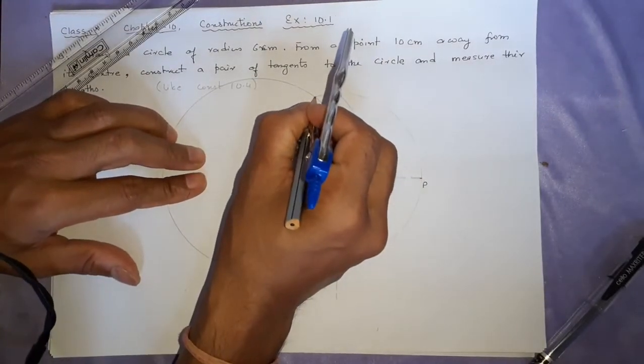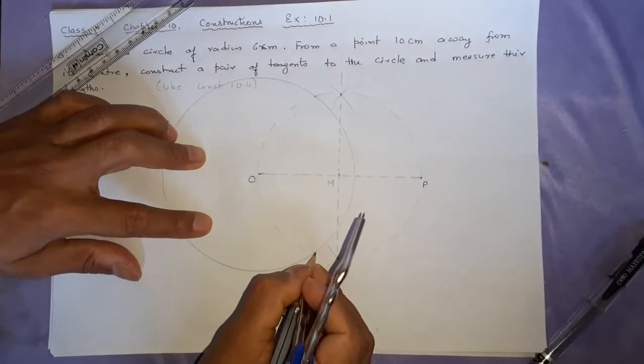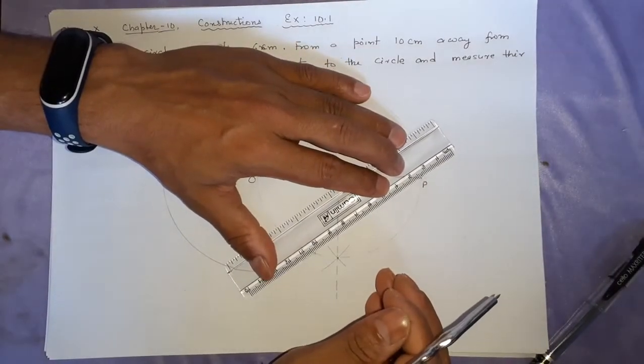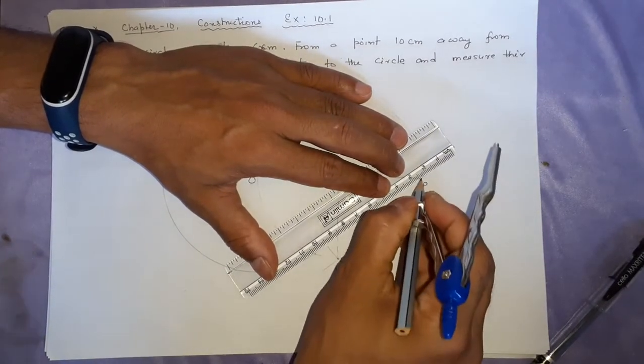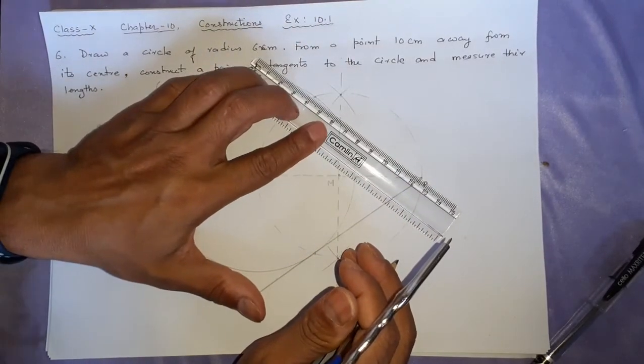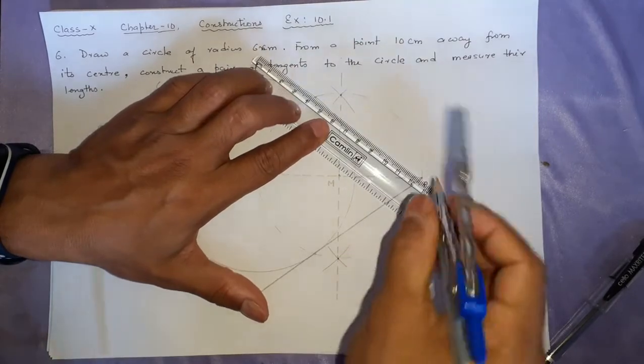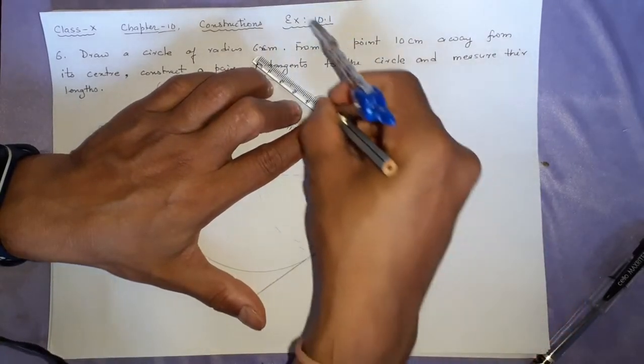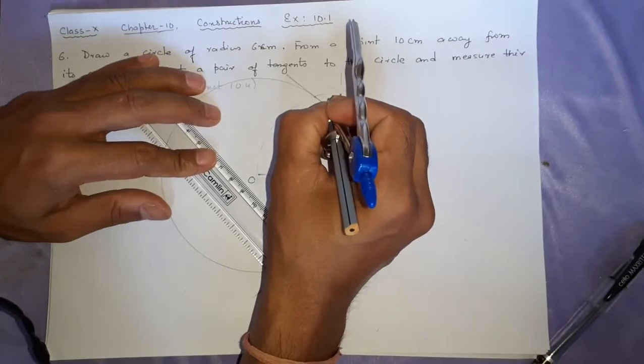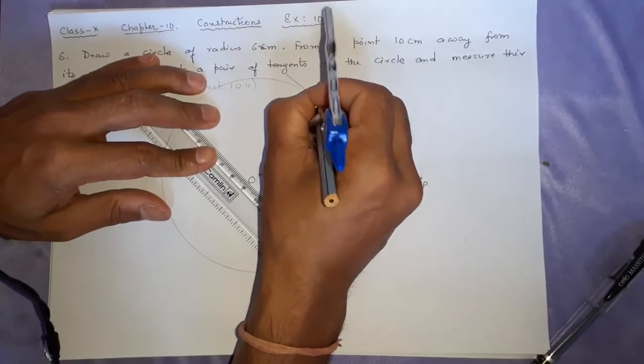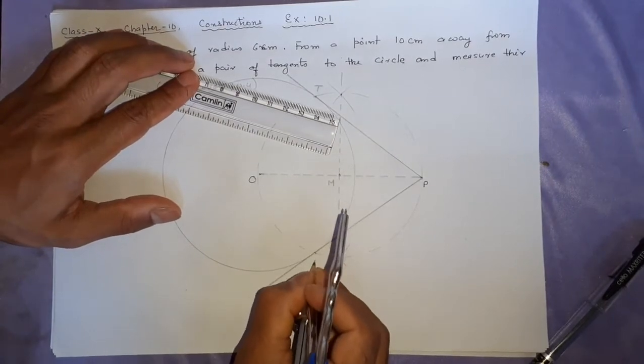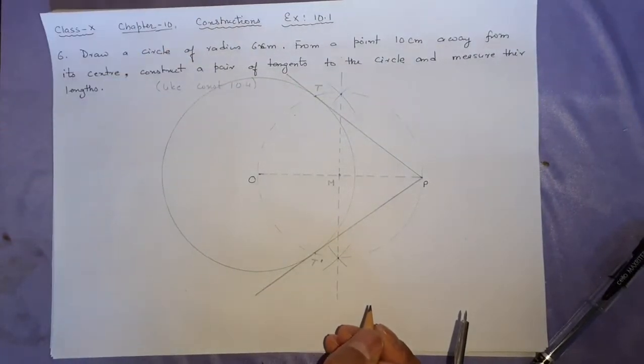Now, only then, the rest part is joining them here with that P. I join it here. This is the tangent. This side. This will be the tangent. We call it here. We give this name T here. We give this name here T dash. So, this is all.